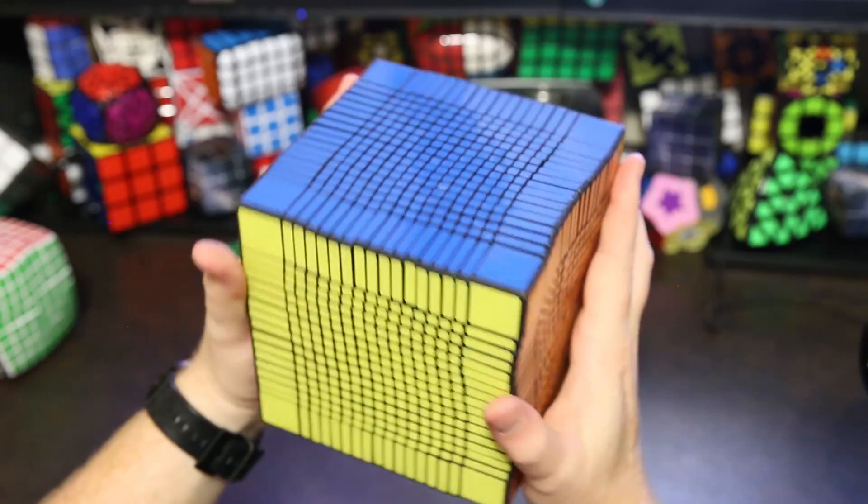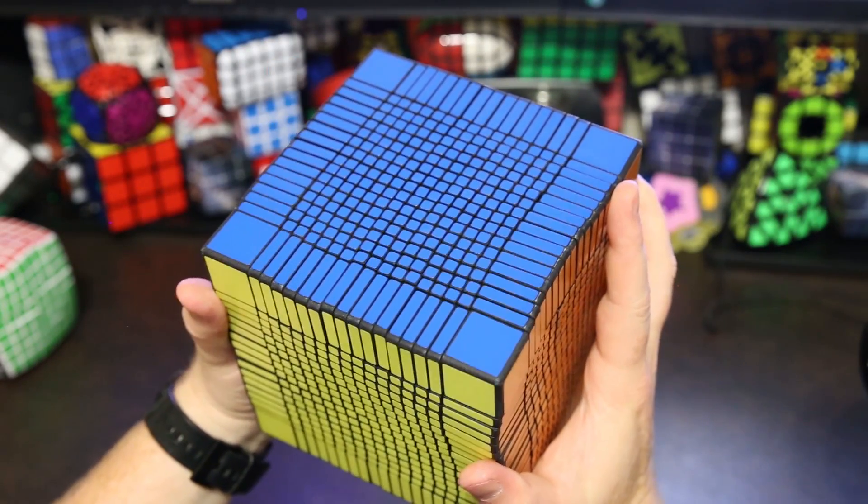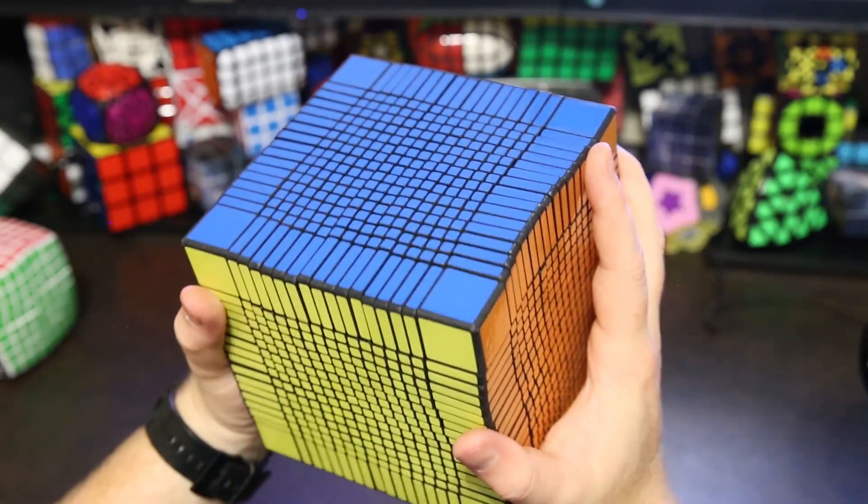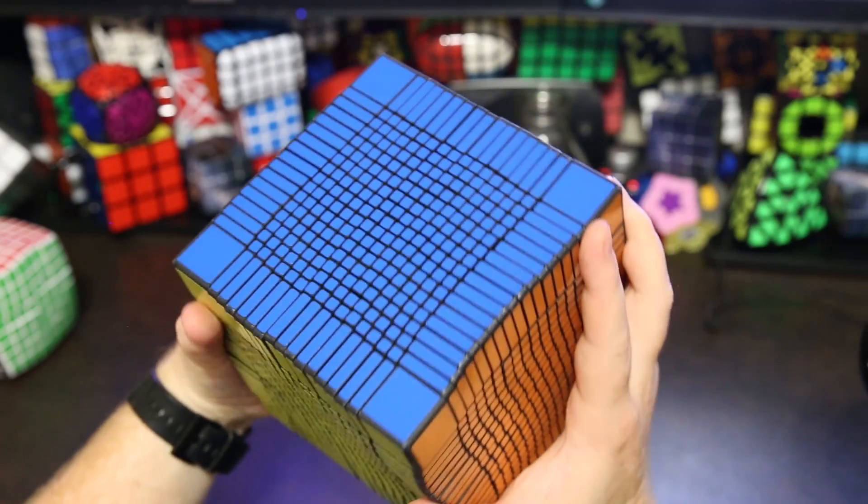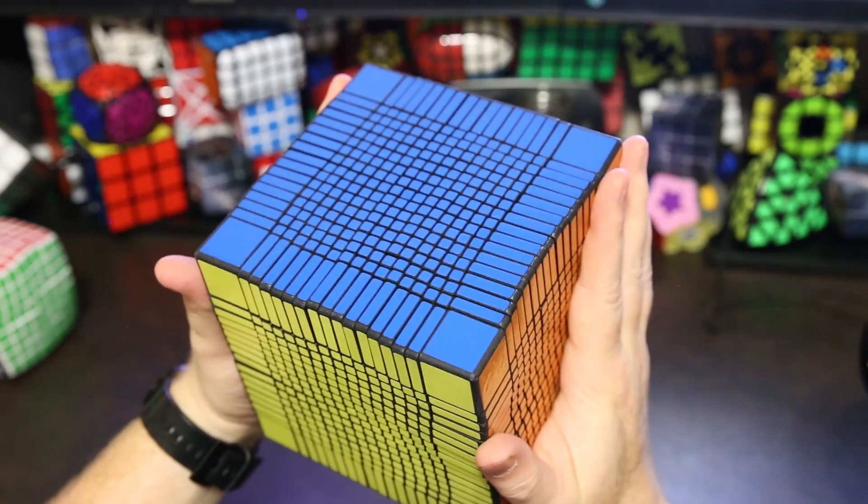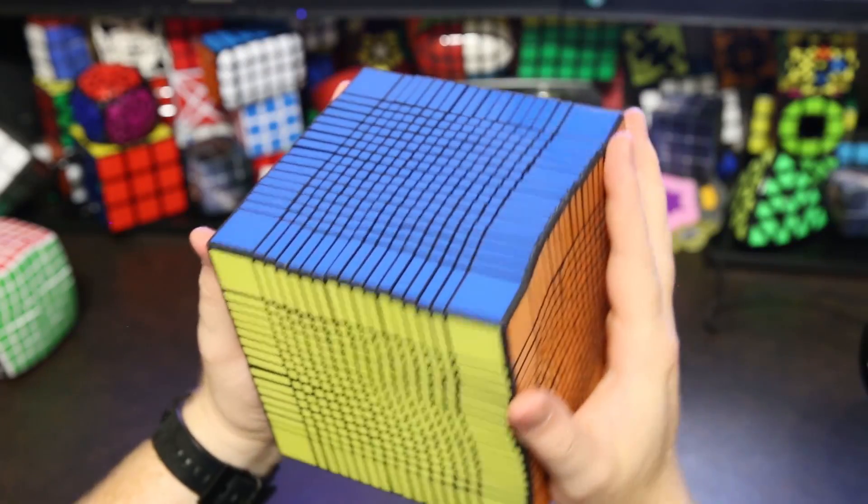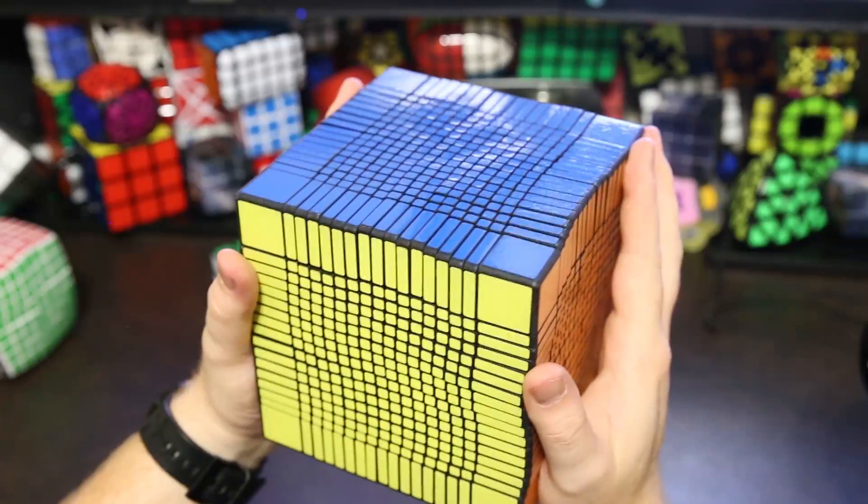So I really want to do a checkerboard pattern for you guys. And I also wanted to talk about the number of positions on a 17x17. And I've actually tried to do that now a couple times. But I'm really bad at twisting and talking at the same time. So I've done a couple takes and failed. So what I'm going to do is I'm going to twist this into a checkerboard pattern. And then I'm going to go back and do a voiceover talking about the positions of a 17x17. So let's get started.